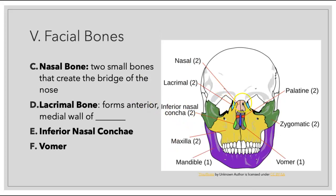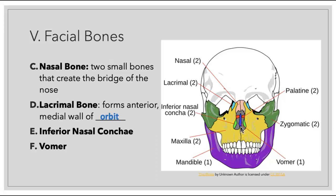Moving on to our nasal bone — these are two small bones that create the bridge of our nose. Moving laterally from there, we can see our lacrimal bone, which forms the anterior medial wall of our orbit. This was called lacrimal because the word lacrimal refers to tears — anatomists used to think this is where tears are produced, but later found there's a lacrimal gland in the upper lateral aspect of the orbit that creates tears, which then wash over the eye and drain out through the medial aspect. We also have the inferior nasal concha and the vomer, which we'll elaborate on shortly.